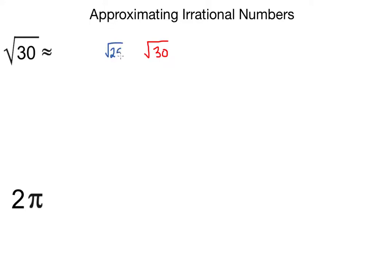In this case, the nearest perfect square below is 25 and the nearest perfect square above is 36. Now how this helps us is that we know the square root of 25 is 5 and the square root of 36 is 6.